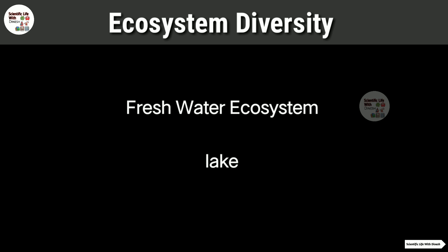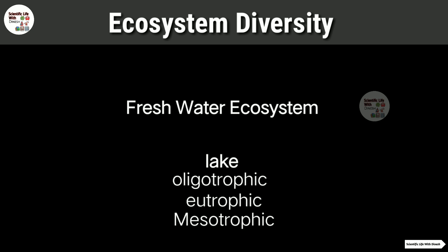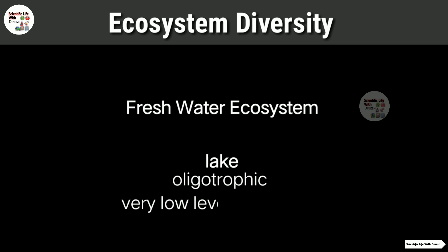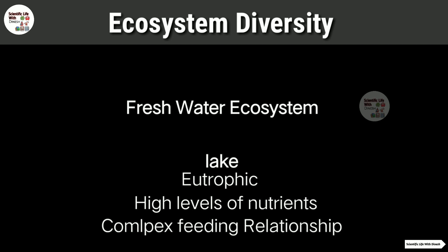Aur jo freshwater ecosystem hai usmein aata hai: lakes, ponds, rivers, streams. Jo freshwater lakes hoti hain unko nutrient ke level ke according classify kiya jata hai — jaise oligotrophic, eutrophic, aur mesotrophic. Oligotrophic mein nutrition ka level bahut kam hota hai. Eutrophic mein nutrition ka level high hota hai aur complex feeding relationship hoti hai.